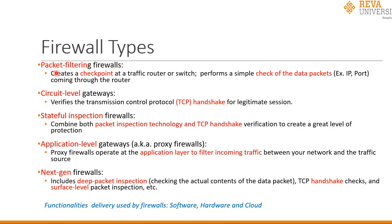A packet filtering firewall creates a checkpoint at the traffic router or switch and performs a simple check of data packets — for example, IP address or TCP port number — coming through the router. The second type is circuit level gateways, which verify the TCP handshake for a legitimate session.